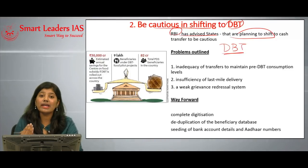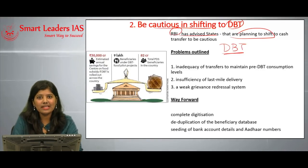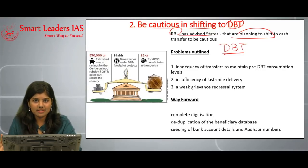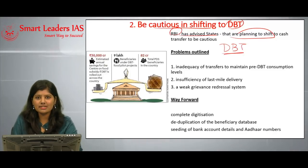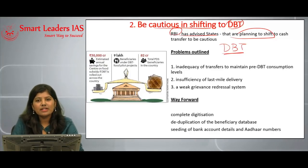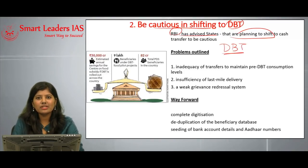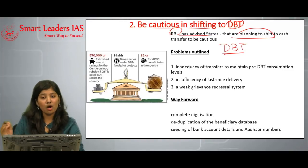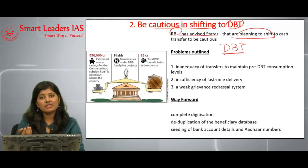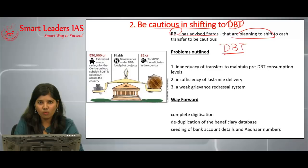DBT also gives greater autonomy to people to choose their own consumption basket. By providing money directly, people can go to the market and purchase food according to their own consumption patterns. DBT is also seen as a way to reduce leakage in the PDS system, since the National Food Security Act requires ensuring food security for every household, but leakage in PDS has been a major barrier to successful implementation.